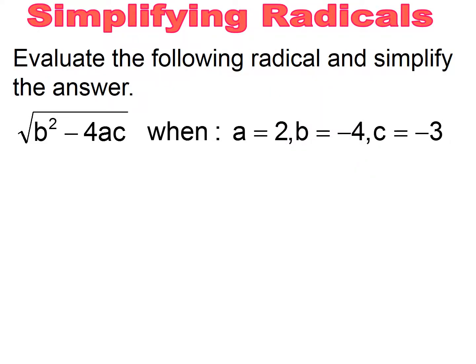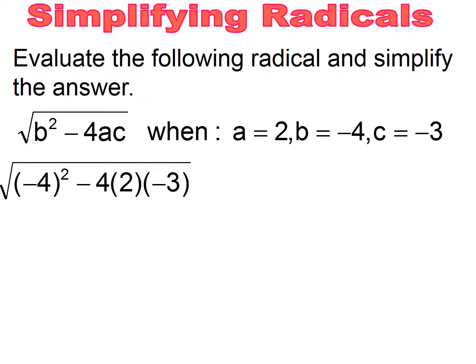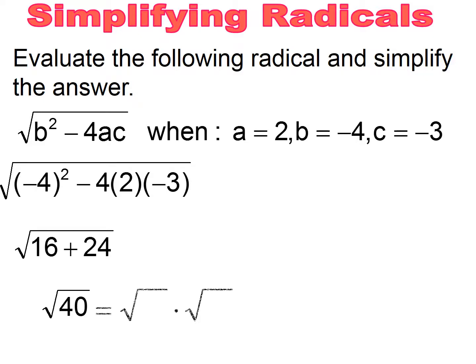Pause and try. You substitute everything in. You square that negative 4, and you're squaring a negative, so it's going to become a positive. You end up getting 16 plus 24. I add the two numbers together and get the square root of 40, then simplify the radical. I'm looking for my highest perfect square factor and my leftover. My perfect square factor is 4, my leftover would be 10, and this simplifies to 2 root 10.